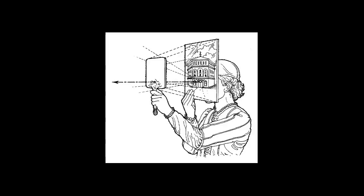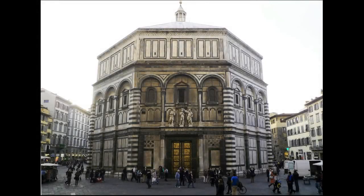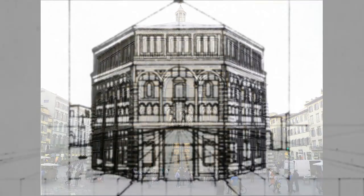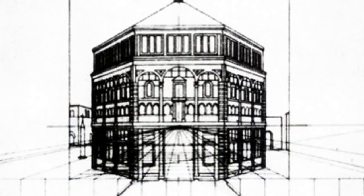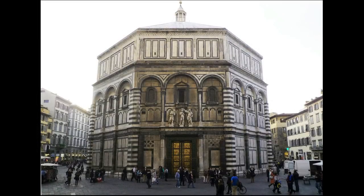He can see the painting's reflection in the mirror, and if he pulls the mirror away, he can see the actual Baptistery. He can bring the mirror back to see the painting, then move it away to see the actual Baptistery, checking whether those lines are well-coordinated. It was a very convincing experiment — what Brunelleschi saw in the reflection of the painting looked exactly like the reality in front of him.